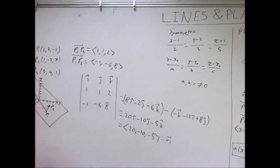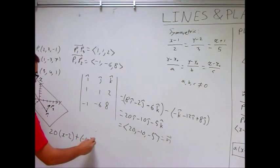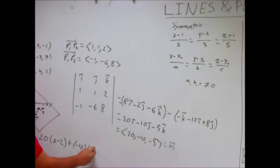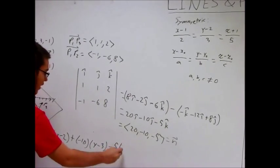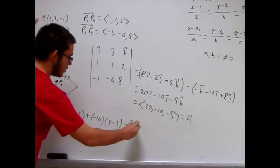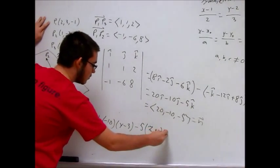And since we have an initial point, we actually have three initial points, we can choose from any of these. So basically, let's put it into that equation, and see what we get. We get 20, X minus two, which means P1, plus negative 10, Y minus three, minus five, Z plus one, equals zero.